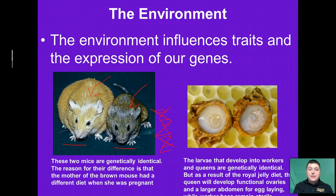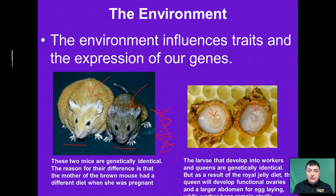Similarly, the nutrition received in the developing offspring of bees can change the expression of genes. When certain larvae receive an enzyme-rich mixture called royal jelly, it leads to the expression of genes such that they become queen bees. So the queen bee is genetically identical to her workers — the only difference was the nutrition she received while developing, which changed the expression of her genes.